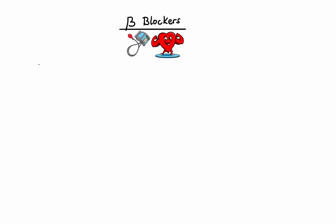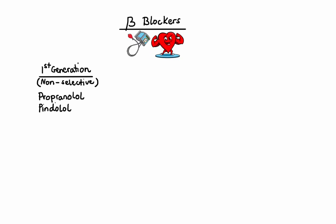First-generation beta blockers are non-selective — they block both beta-1 and beta-2 receptors throughout the body. Examples include propranolol, pindolol, nadolol, sotalol, and timolol. Practically all of the applications of these agents are based on blockade of beta-1 receptors on the heart, which results in decreased heart rate, delayed conduction through the AV node, and reduced contractility. The final outcome is decreased cardiac output and decreased oxygen demand of the heart muscle.